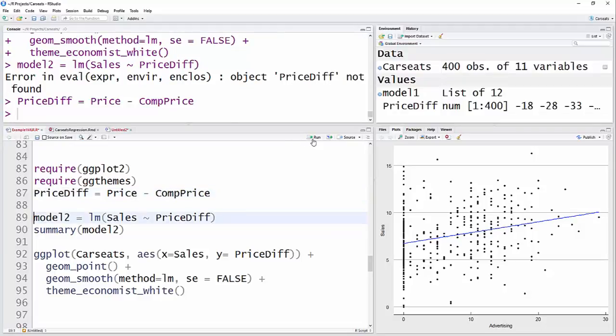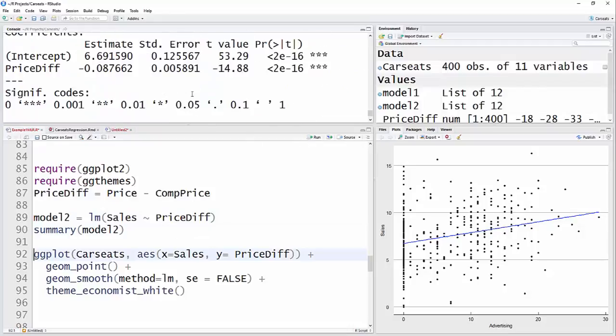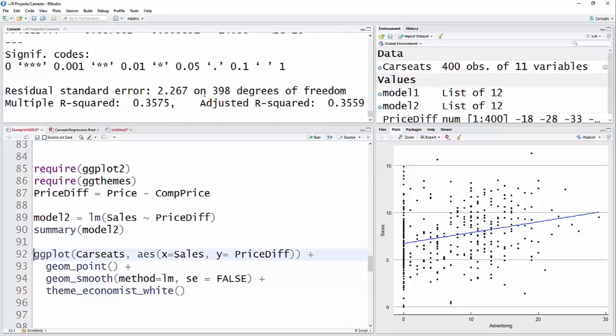And so now I'm going to run my model, and you can see that I have a statistically significant relationship in terms of p-value, and we have an r-squared of 0.36. That's pretty good.